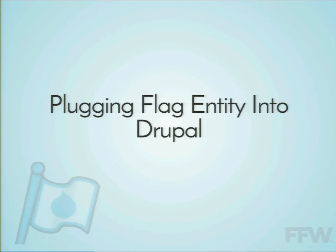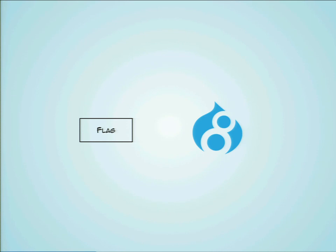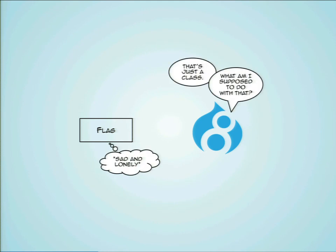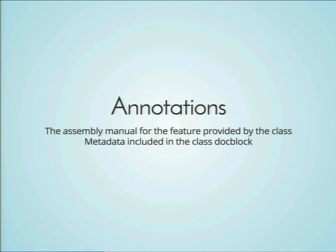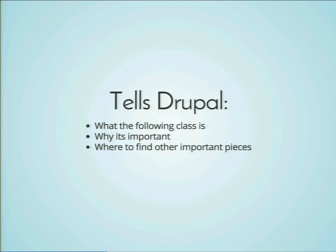We have our flag entity class defined. Now let's plug that into Drupal. We have our class — we hand it over on a golden platter to Drupal, and then Drupal is like, what the heck am I supposed to do with that? That's just a class. We need another piece of information — something to tell Drupal what this class actually does. We need a config entity assembly manual for flag. That assembly manual is called an annotation. It's metadata contained within the class doc block so that Drupal knows what this class is supposed to do.